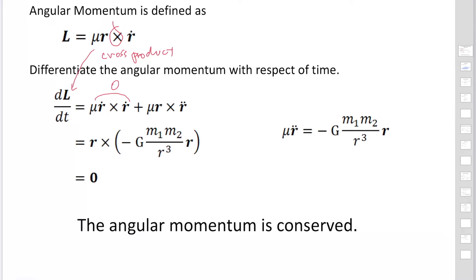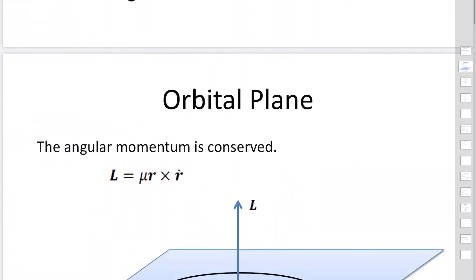We have mu r cross r-double-dot, which equals r cross mu r-double-dot. Substituting the equation of motion, this also becomes a cross product of r with r, which is zero. So the derivative of the angular momentum is zero, meaning angular momentum is conserved.